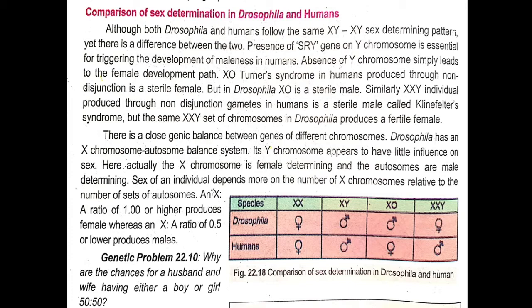But in Drosophila, XO produces a sterile male. If one X chromosome is missing in Drosophila, a male is produced — not a female — and that male is a sterile male. So in humans we get a sterile female (Turner's syndrome), whereas in Drosophila with XO we get a sterile male.